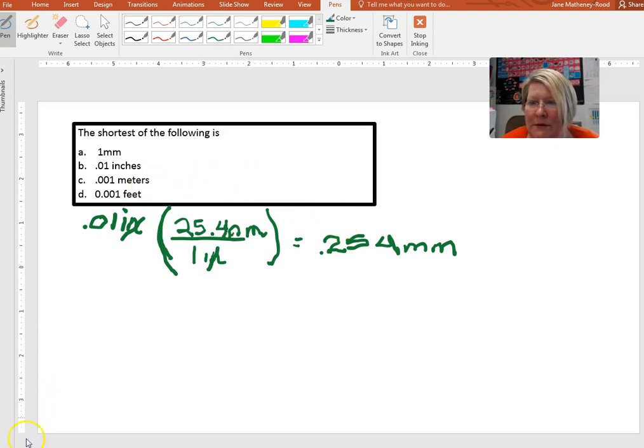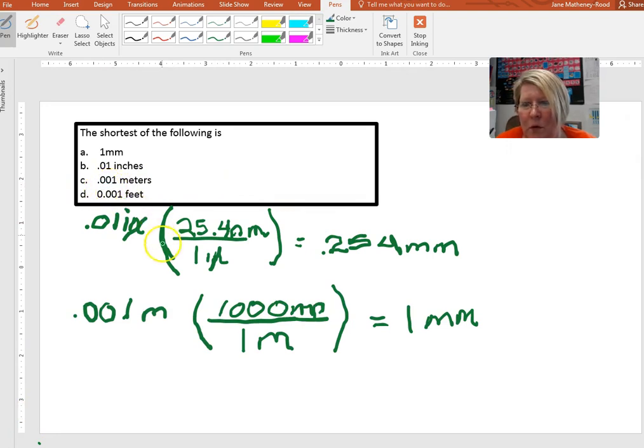Let's move on to 0.001 meters. For C, 0.001 meters, we need to look up and see how many millimeters there are in a meter and that would be 1,000 millimeters per one meter. You can see that your meters will cancel out at this point and so 0.001 meters is equivalent to 1 millimeter.